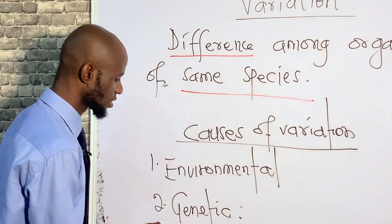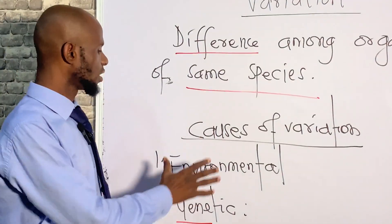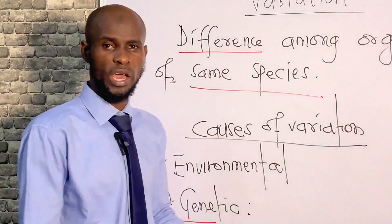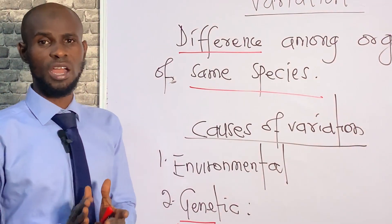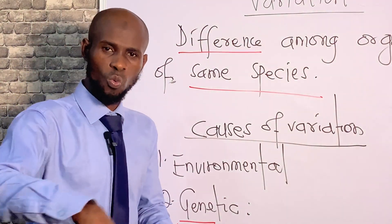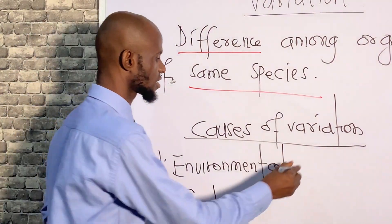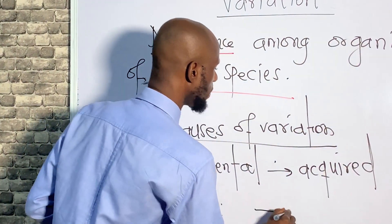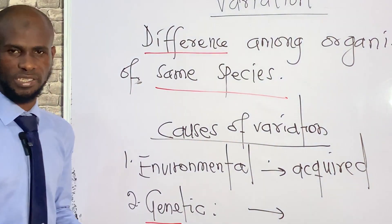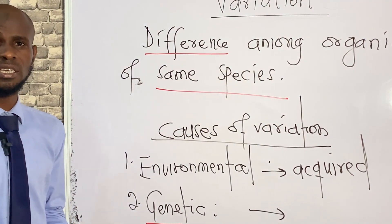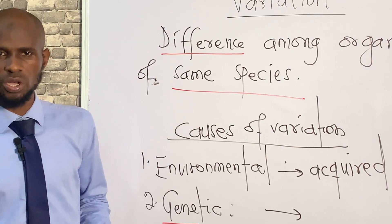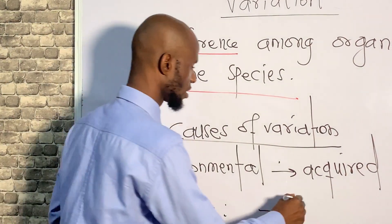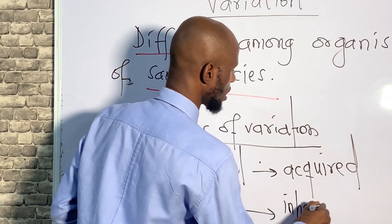Genetic comes from the word 'gene.' The major difference between environmental and genetic variation is that environmental variation is what you acquire through the interaction of an individual with the environment — so we say it is acquired. The main cause of variation is genetic, meaning it is transferred from one organism to another, and that is what we call inherited.